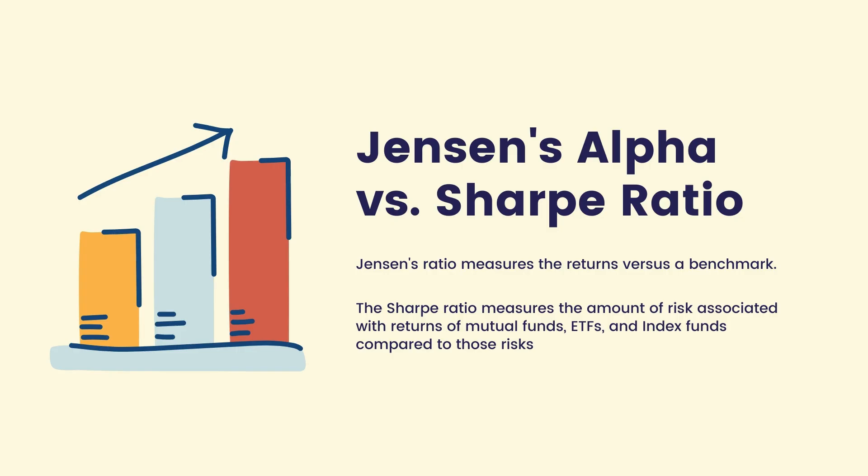Jensen's Alpha versus Sharpe Ratio: Jensen's Ratio measures the returns versus a benchmark, where the Sharpe Ratio measures the amount of risk associated with returns of mutual funds, ETFs, and index funds compared to those risks.